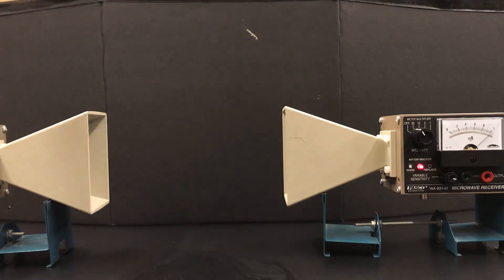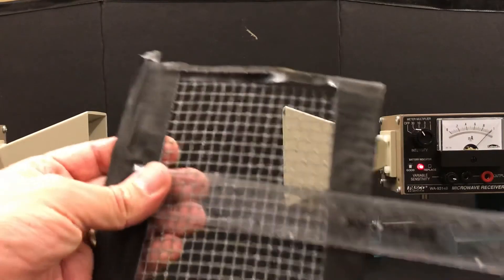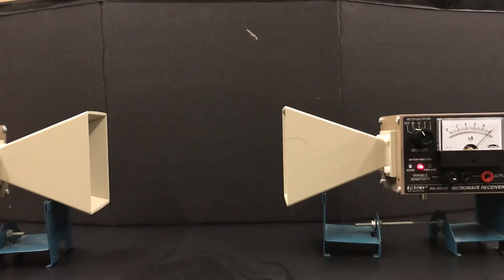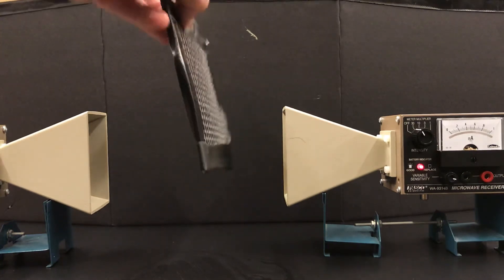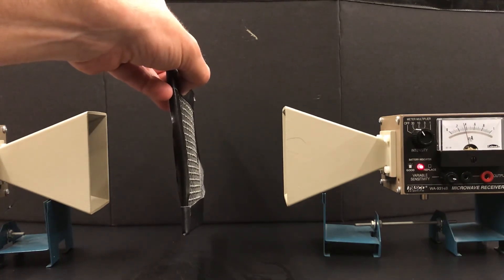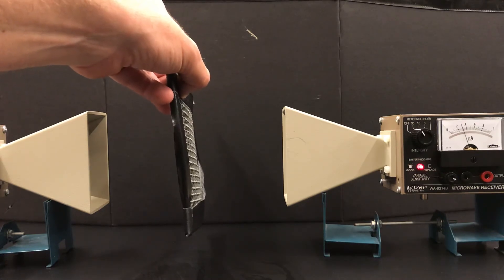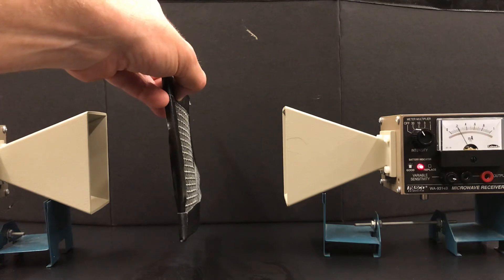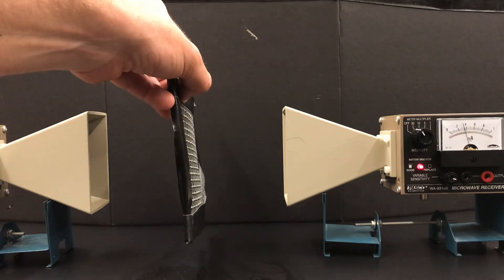The other screen I have is closer to half a centimeter square. With this in the way, you can see the needle's bouncing around a little but it's definitely less than half now, so quite a bit less microwave radiation is getting through the smaller screen.